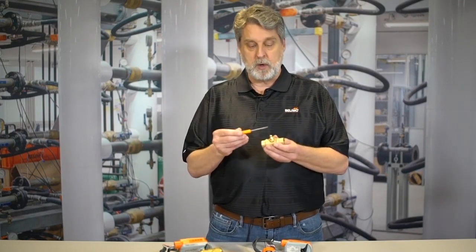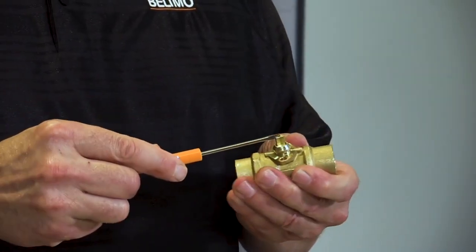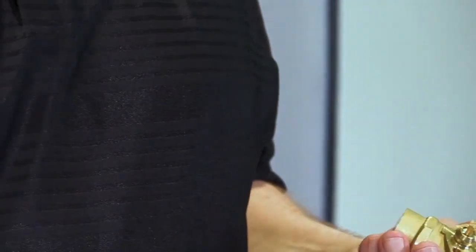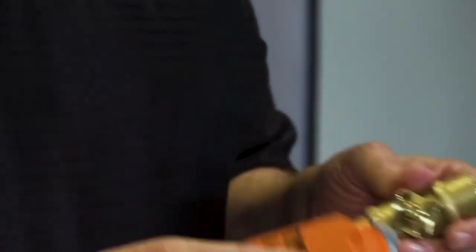You have a screwdriver or a wrench. You take it, put it in, and turn it. Now, the actuator will go right back on.